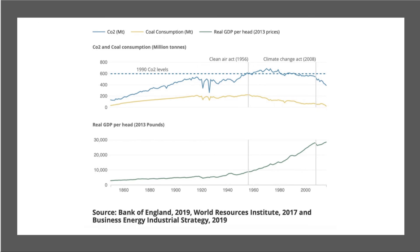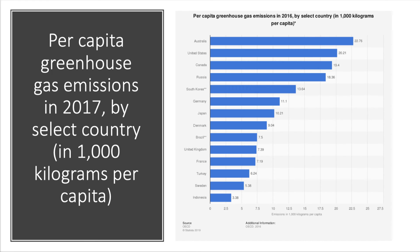The website Our World in Data has lots of information on this. Looking at UK data, real GDP per head has been rising at constant prices, while CO2 equivalent emissions have fallen substantially below 1990 levels. Among advanced countries, the highest per capita greenhouse gas emissions come from Australia, the United States, and Canada — substantially above others. The UK comes in at 7.39 tonnes per capita, below that of Brazil.